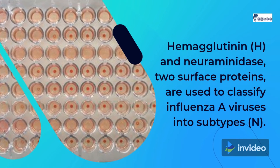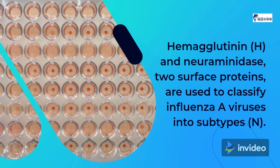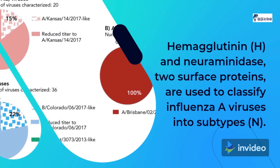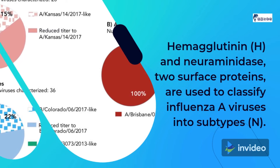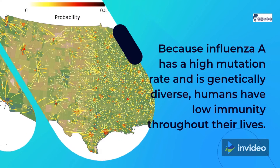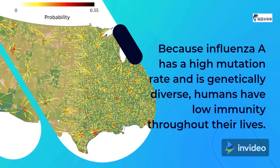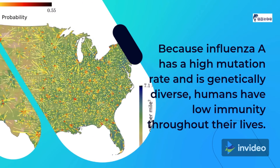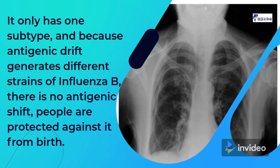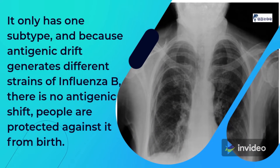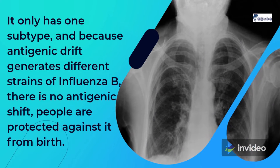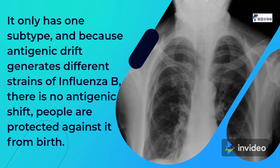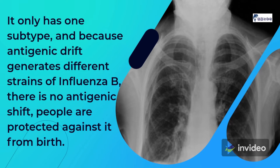Hemagglutinin (H) and neuraminidase (N), two surface proteins, are used to classify Influenza A viruses into subtypes. Because Influenza A has a high mutation rate and is genetically diverse, humans have low immunity throughout their lives. Influenza B only has one subtype, and because antigenic drift generates different strains of Influenza B with no antigenic shift, people are protected against it from birth.